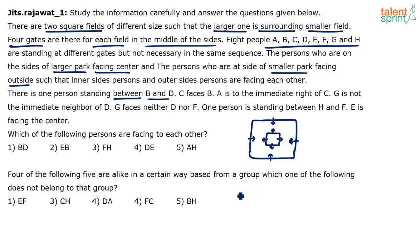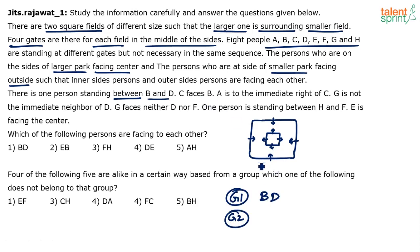I am trying to make two groups — Group 1 and Group 2, one inner and one outer. B and D are clearly in the same group. C faces B, so depending on where B is, C comes on the opposite side. If B is in the inner field, C will be in the outer field, and vice versa. So C cannot be in the group of B and D — C has to be in the other group.